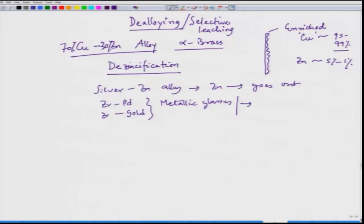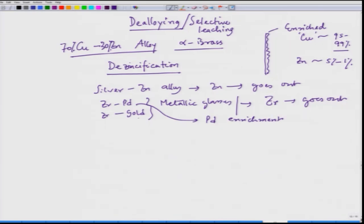If we leave these two metallic glass alloys in HCl solution, then zirconium goes out. In the case of zirconium-palladium, we have palladium enrichment, and in the case of zirconium-gold, we have gold enrichment. So here also this is dealloying, since zirconium is going out.